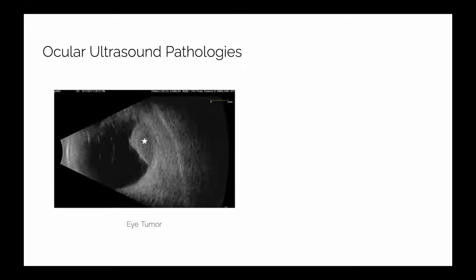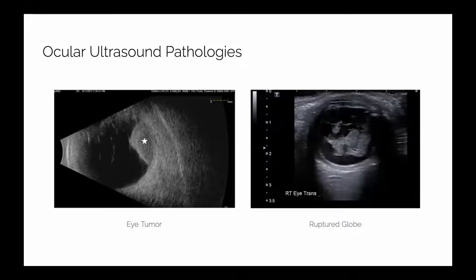A couple more pathologies we can find: if you have masses in the eye, like this tumor - this is actually a choroidal melanoma - you can detect masses within the eyeball as well. And this is kind of your worst case scenario: ruptured globe. Pretty much your eyeball is ruptured.